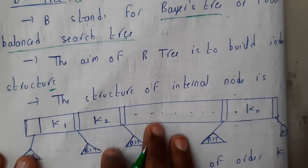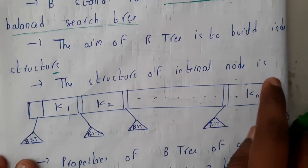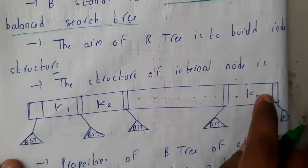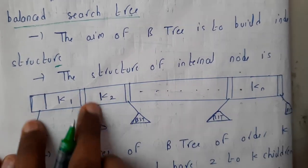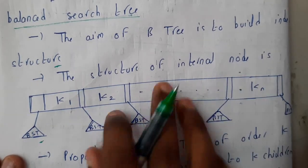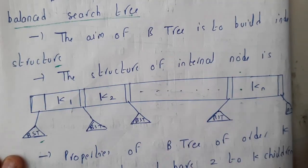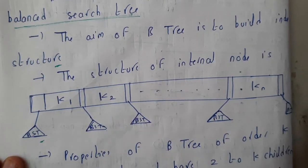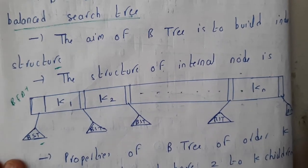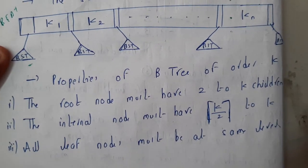The representation of a B-tree will be in this way. Let us assume this is our root node — in that we'll be having multiple keys, and each key will be having their subtrees. These child nodes are also in the same format; they will also be having subtrees, and this process continues. This is the basic representation of B and B+ tree.